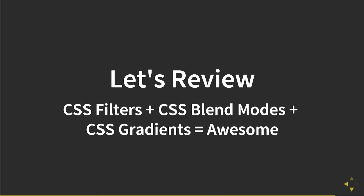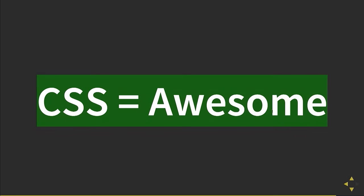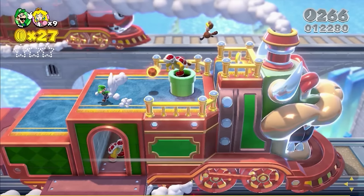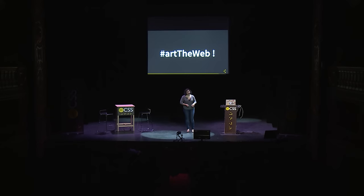So let's review: CSS filters plus CSS blend modes plus CSS gradients are pretty awesome. And CSS is pretty awesome — in a couple lines of code you can have a hue rotate transition, or highlight transitions. This is also just the beginning. Right now we're at basic beginner Super Mario, but soon we're going to be at Super Mario 3D World as browsers get better at rendering graphics, which is really exciting. There are tons of different image effects to play with — I combined resources at arttheweb.com where you can get all the demos. Thank you so much for having me.